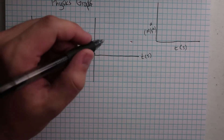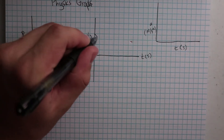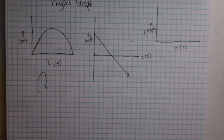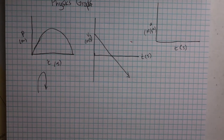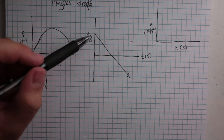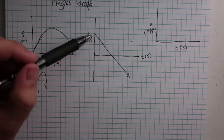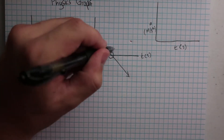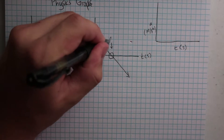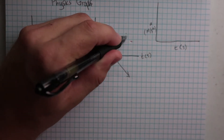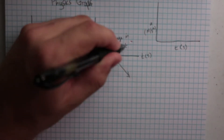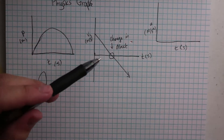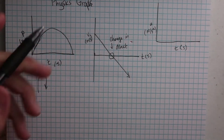On a velocity-time graph, this is going to look like a straight line down. We start with an initial positive velocity that is very high, and it decreases to zero. It is at this point that we have our change in direction - where the line crosses the x-axis is the change in direction.